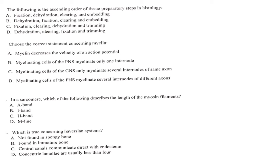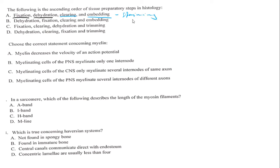The first question asks for the ascending order of tissue preparation steps in histology. Every anatomy student needs to know these steps. The first step is fixation, where the tissue is preserved. Then there is dehydration, where water is removed. After that comes clearing, then embedding, and finally staining, which allows us to view the tissue under a microscope. The answer is A.